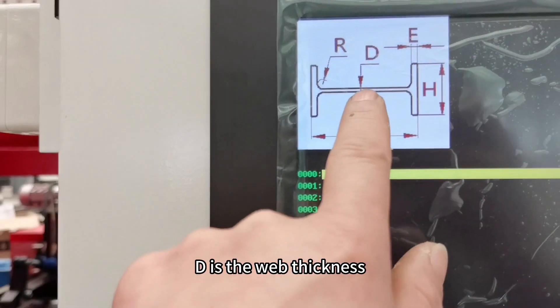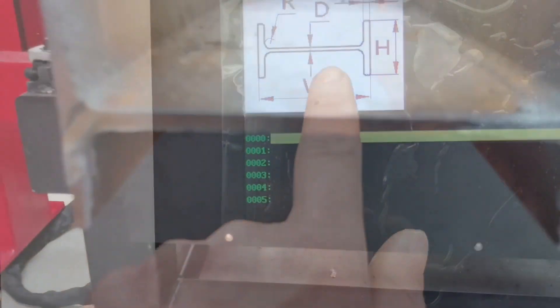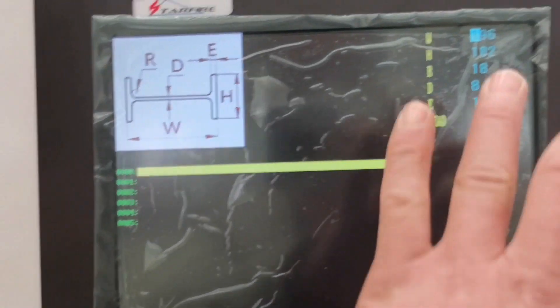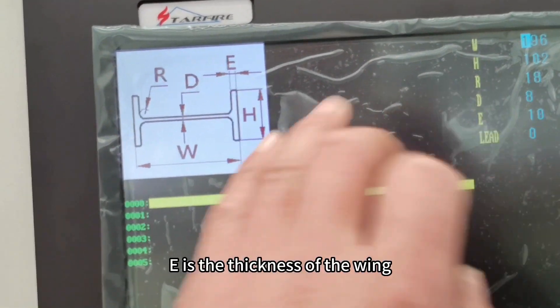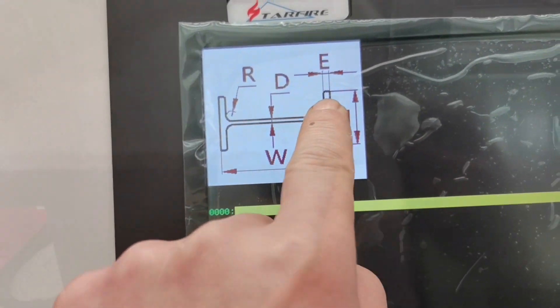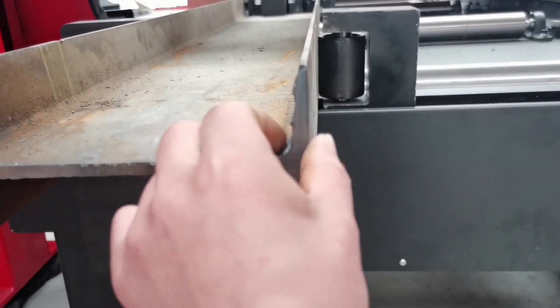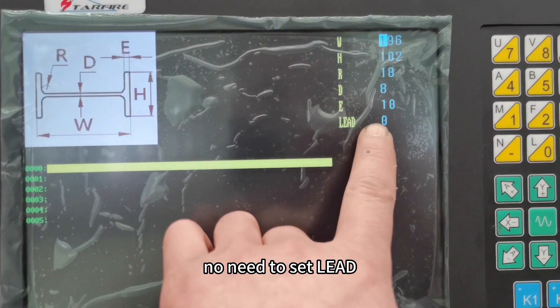D is the web thickness. E is the thickness of the wing. No need to set lead.